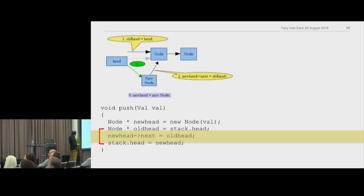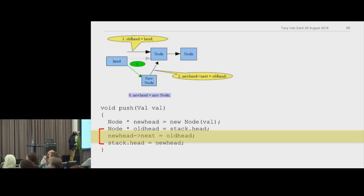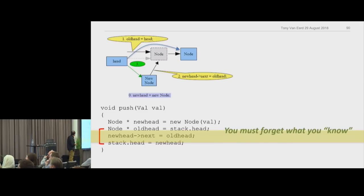What if head has changed between those two lines? We read it and then we write it — if someone else came in between, our new node's `next` will point to the wrong place. You think you know where the old head is, but what if halfway through, that second node gets deleted by another thread? You want it to end up looking like this when you set head to the new head, but head has moved on, and now you're creating a chain with a deleted node in the middle.